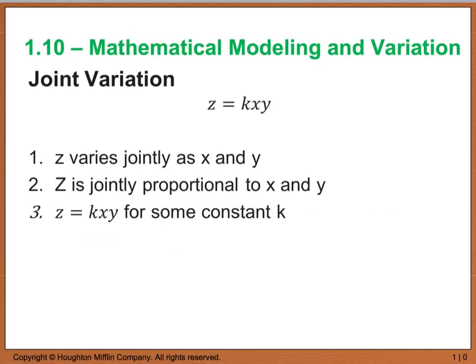And the last type of variation that we're going to look at today is called joint variation. And it's z equals kxy is what the formula looks like. And we read this as z varies jointly as x and y, or z is jointly proportional to. And again, we have that same constant of proportionality.